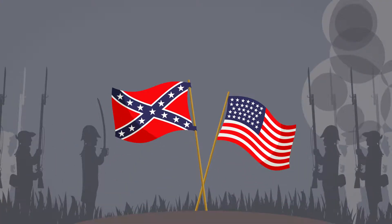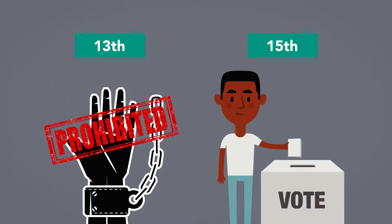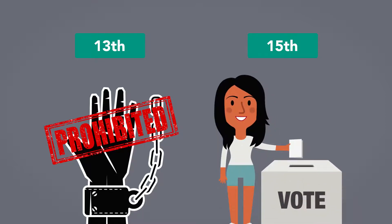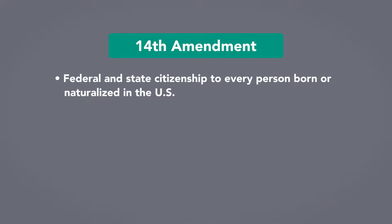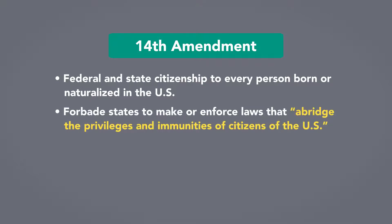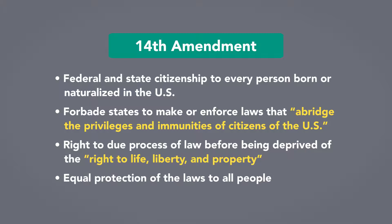Subsequent constitutional amendments have added to constitutional civil rights protections. In the wake of the Civil War, the 13th, 14th, and 15th Amendments were passed by Congress and ratified by the states. The 13th Amendment prohibited slavery, and the 15th Amendment guaranteed men of all races the right to vote. Women's suffrage was not enshrined in the Constitution until decades later. The 14th Amendment granted federal and state citizenship to every person born or naturalized in the U.S., forbade states from making or enforcing laws that abridge the privileges and immunities of citizens, guaranteed due process of law before deprivation of life, liberty, and property, and guaranteed equal protection of the laws to all people.